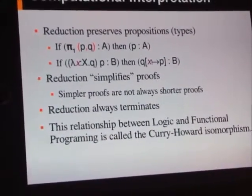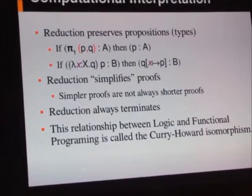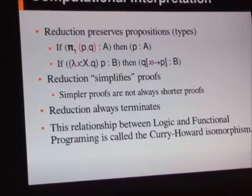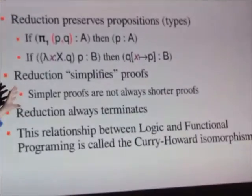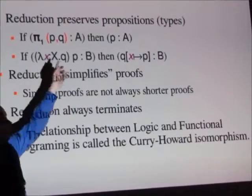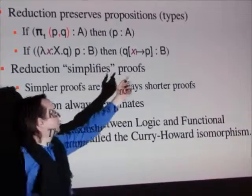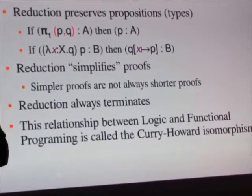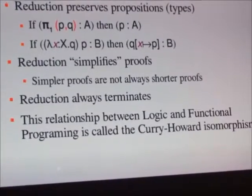So this reduction simplifies proof, for some definition of simplifies. But it's important to note that simpler proofs don't necessarily mean shorter proofs because of this horrible step over here, where this substitution might copy your entire tree of p n times where n is the number of expressions that you've closed off.